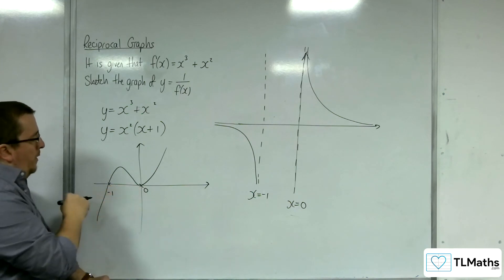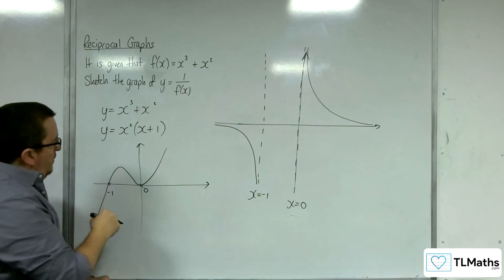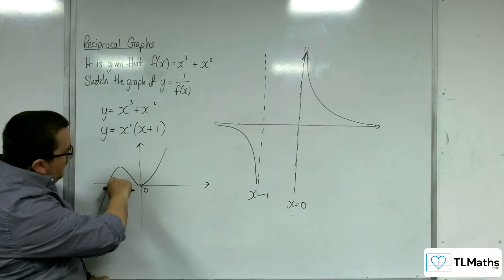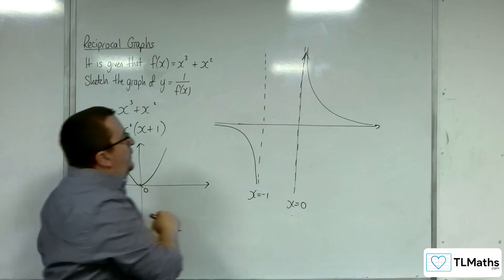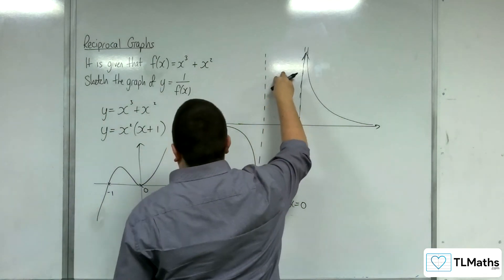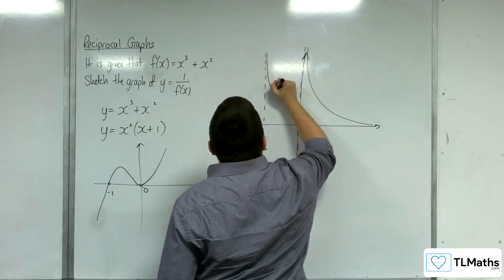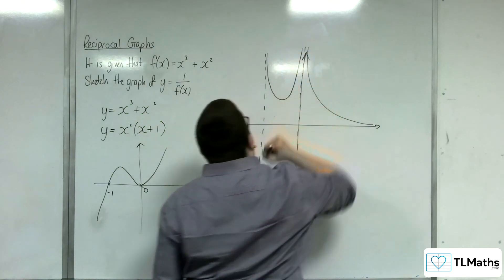And between minus 1 and 0, we've got the graph being positive, and so our graph will be positive also. And so it must look something like that.